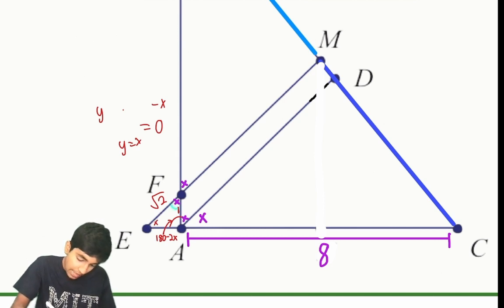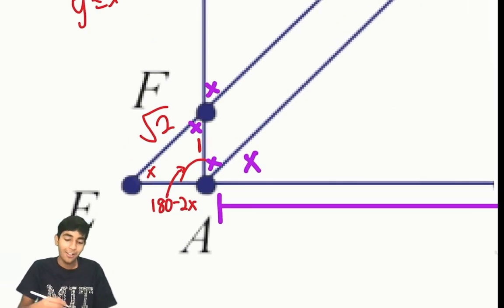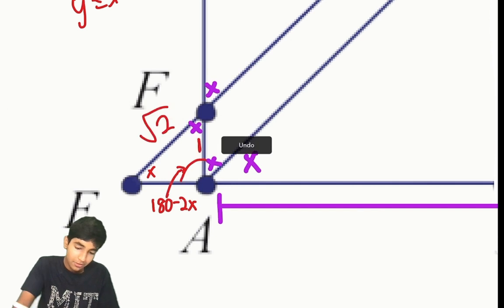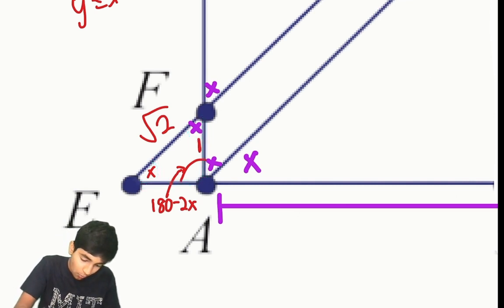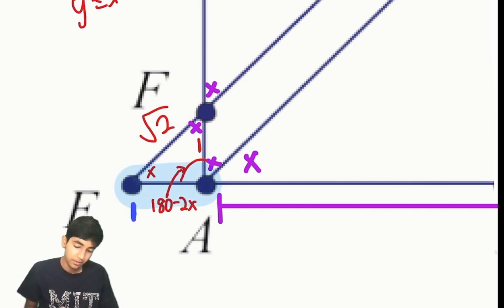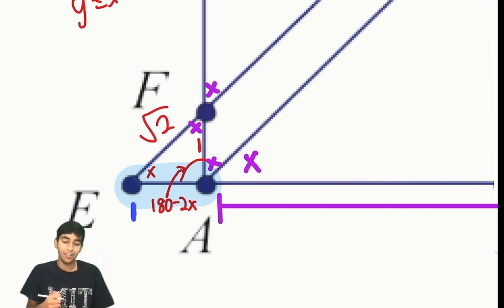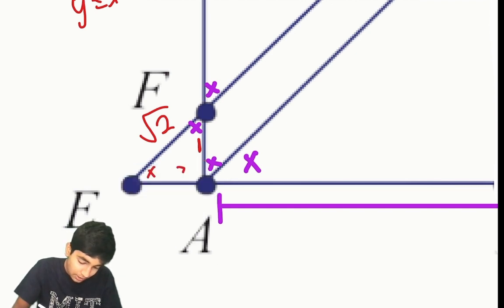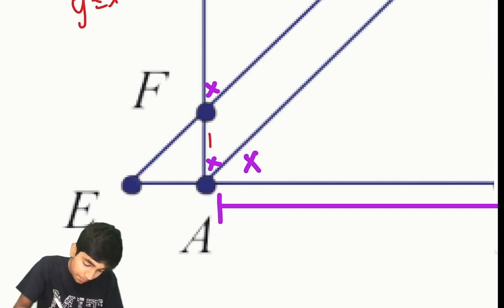So this angle is x and this angle is x — that's an isosceles triangle. Two base angles are equal, so this side, which we know to be 1, must equal this side. Now we know this side is also 1. And 1, 1, root 2 — that's a 45-45-90 triangle. Our suspicion was correct, and now we know it's a 1, 1, root 2, 45-45-90 triangle.